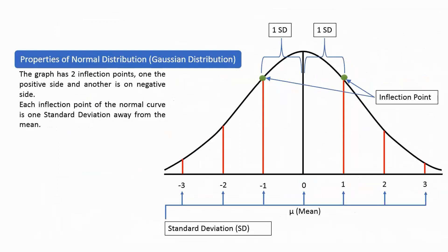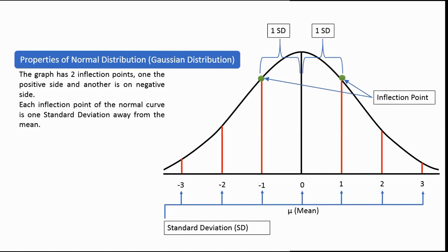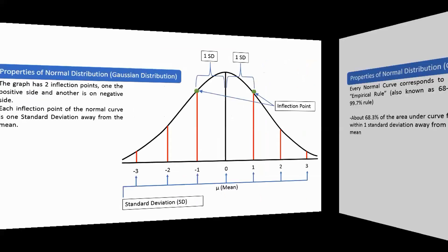In general, the graph of a normal distribution is a bell-shaped curve with two inflection points — one on the left and another on the right. Inflection points are the points that mark the change in the curve's concavity, specifically at mean minus standard deviation and mean plus standard deviation. Note that each inflection point of a normal curve is one standard deviation away from the mean.